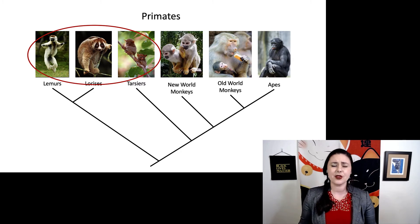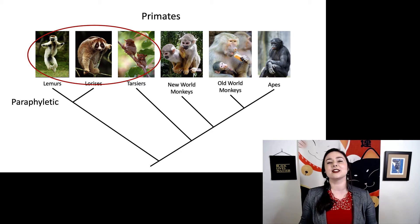So here is our last example. Now I've circled lemurs, lorises, and tarsiers. What type of group would you consider this one? Monophyletic, paraphyletic, or polyphyletic? This is an example of a paraphyletic group because now we've only taken some of the descendants and we're excluding others.